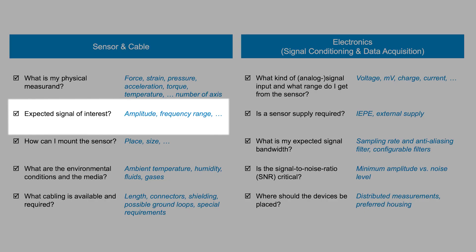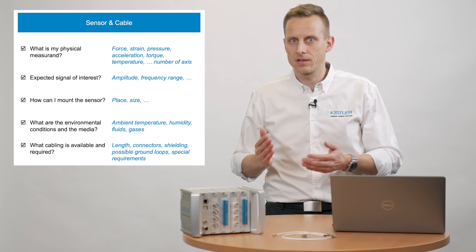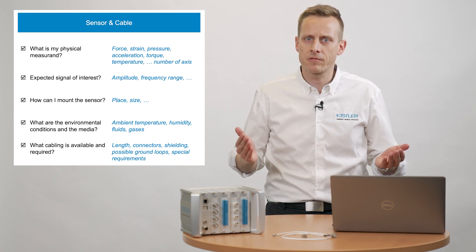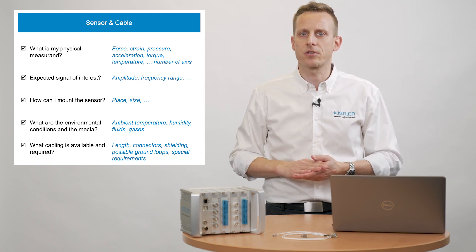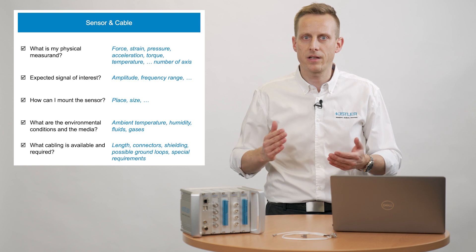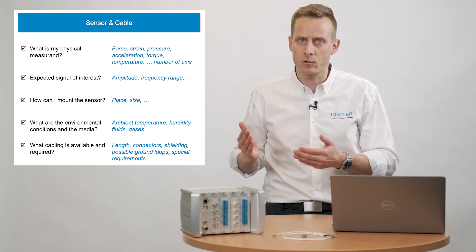What signal do I expect? What will be my amplitude or signal range? What peak values may occur? Slow signals, fast signals — in which frequency range do I want to measure? Are there peaks or spikes with high signal frequency or harmonics?